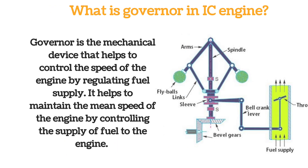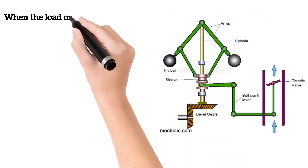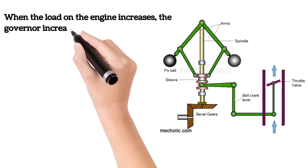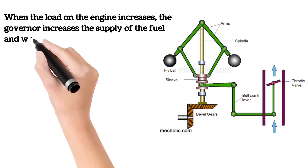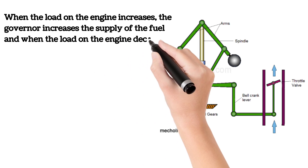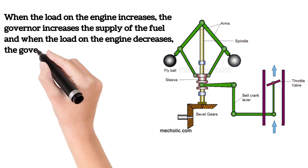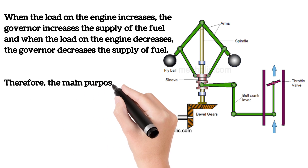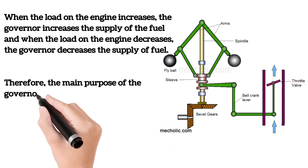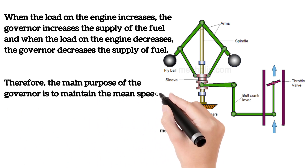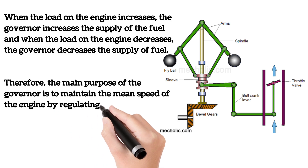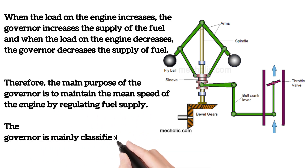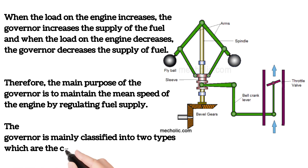When the load on the engine increases, the governor increases the supply of fuel, and when the load on the engine decreases, the governor decreases the supply of fuel. Therefore, the main purpose of the governor is to maintain the mean speed of the engine by regulating fuel supply.